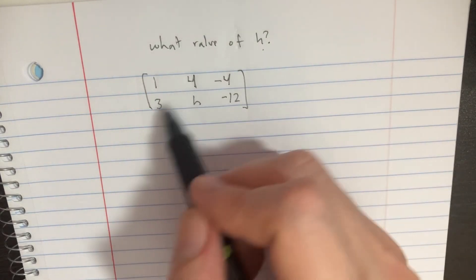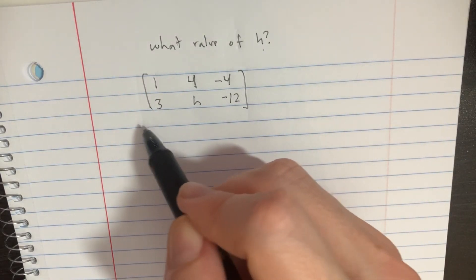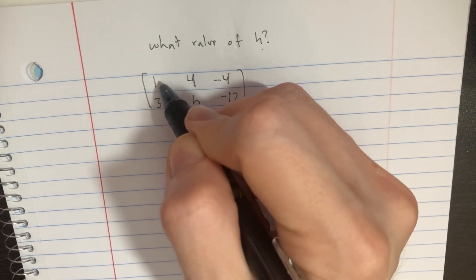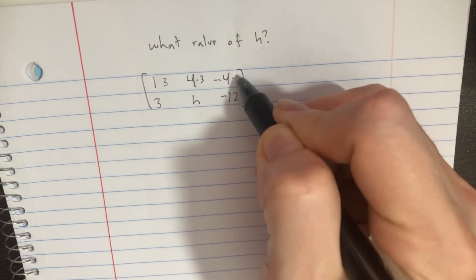If we're trying to figure out what value of h would make this matrix work, let's try to solve this. We have to multiply this top row by 3 kind of first.